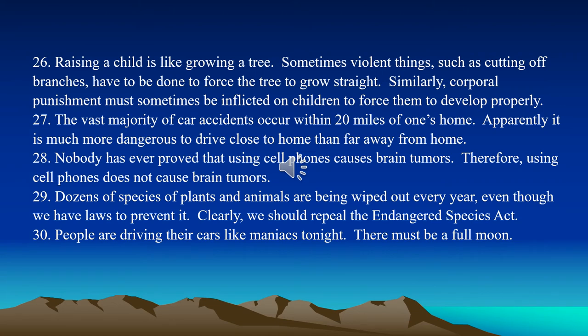Number twenty-six/twenty-seven: Raising a child is like growing a tree. Sometimes violent things such as cutting off branches have to be done to force the tree to grow straight. Similarly, corporal punishment must sometimes be inflicted on children to force them to develop properly. Whenever I hear something is like something else, I immediately start thinking about the analogy — where is this going? Here we have a clear case of a very weak analogy. There's no real comparison between pruning a tree and spanking your children.